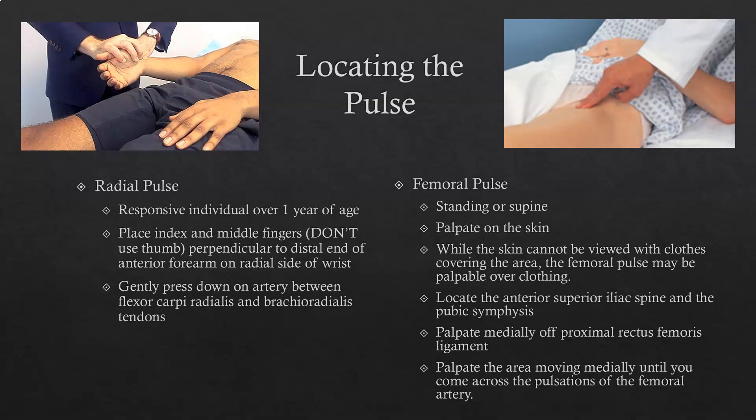If direct skin access is not possible, you can palpate the femoral pulse over clothing, though more layers make it difficult. Locate the anterior superior iliac spine and the symphysis pubis, then move toward the proximal rectus femoris — that's the femoral triangle. If the patient goes into a figure-four position, you'll see the crease and find the pulsations of the femoral artery slightly medial from that location.